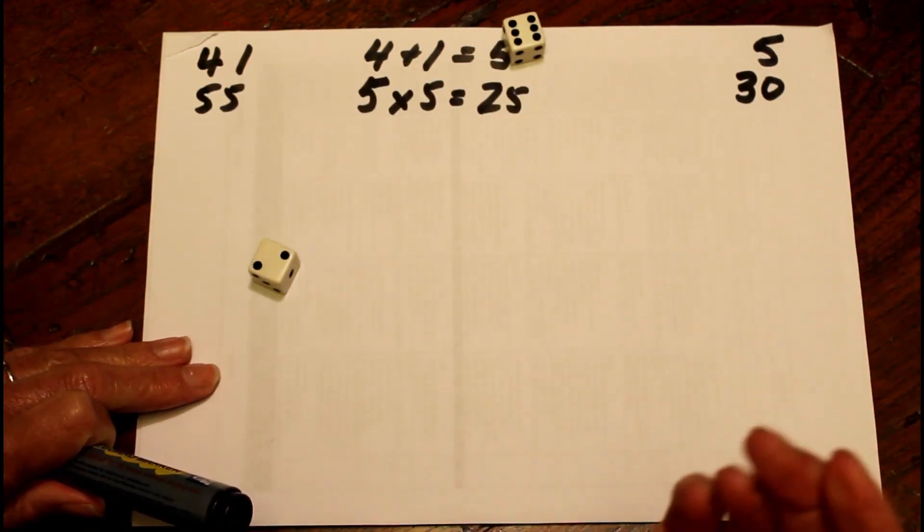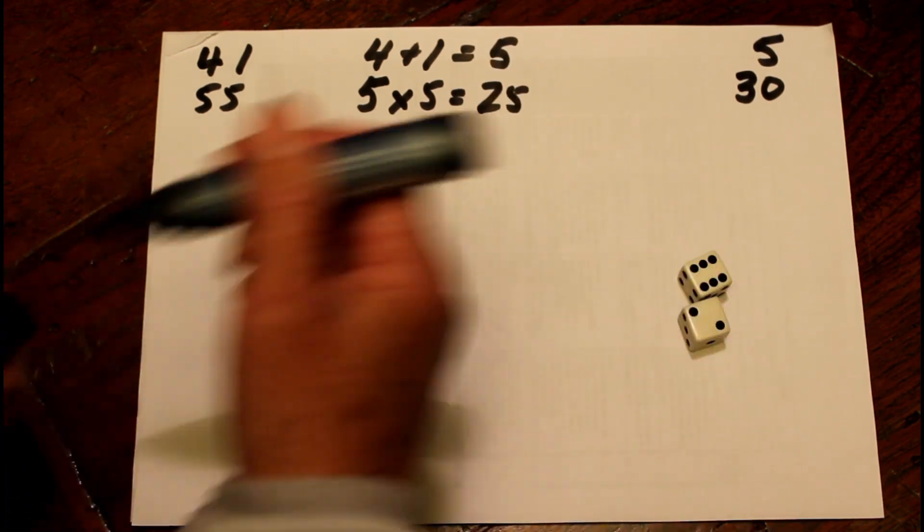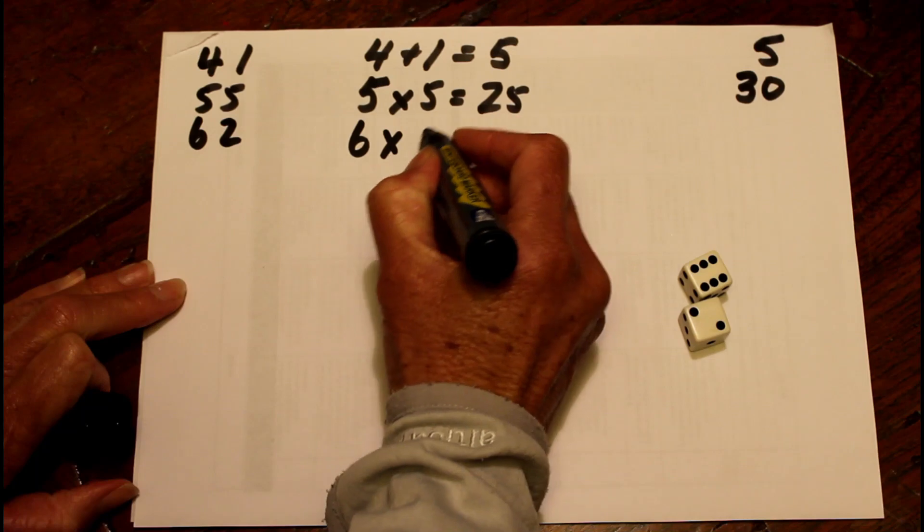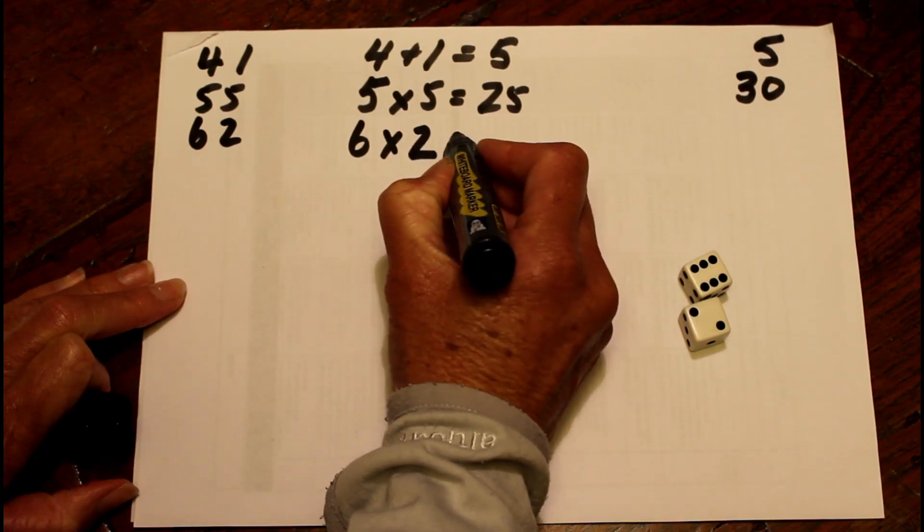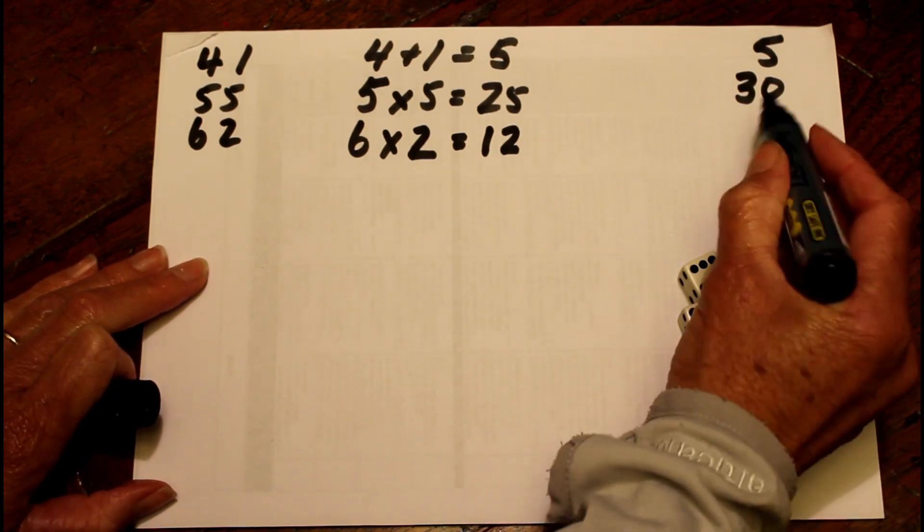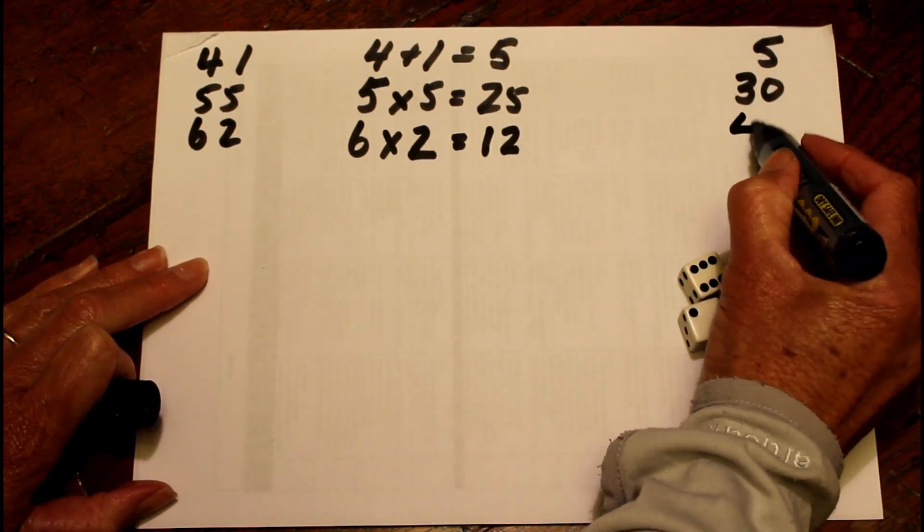I'm now going to throw my dice again. I've got a 6 and a 2. I think once again, best to use multiplication. So I'm going to go 6 times 2 is 12. I know that 30 plus 12 is 42.